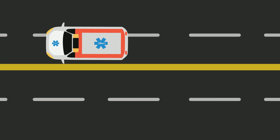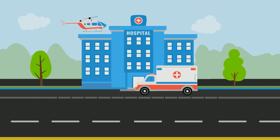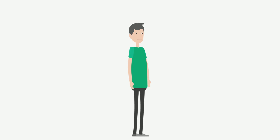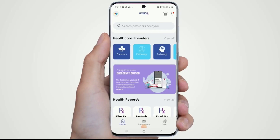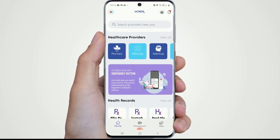Medical emergencies can happen to anyone, and every minute counts. Wasting time searching for contact numbers can mean a serious loss of precious time. When times are healthy, take a step to pre-configure five trusted contacts — like your family, friends, hospital, or ambulance — who can be alerted when you are in a medical emergency.